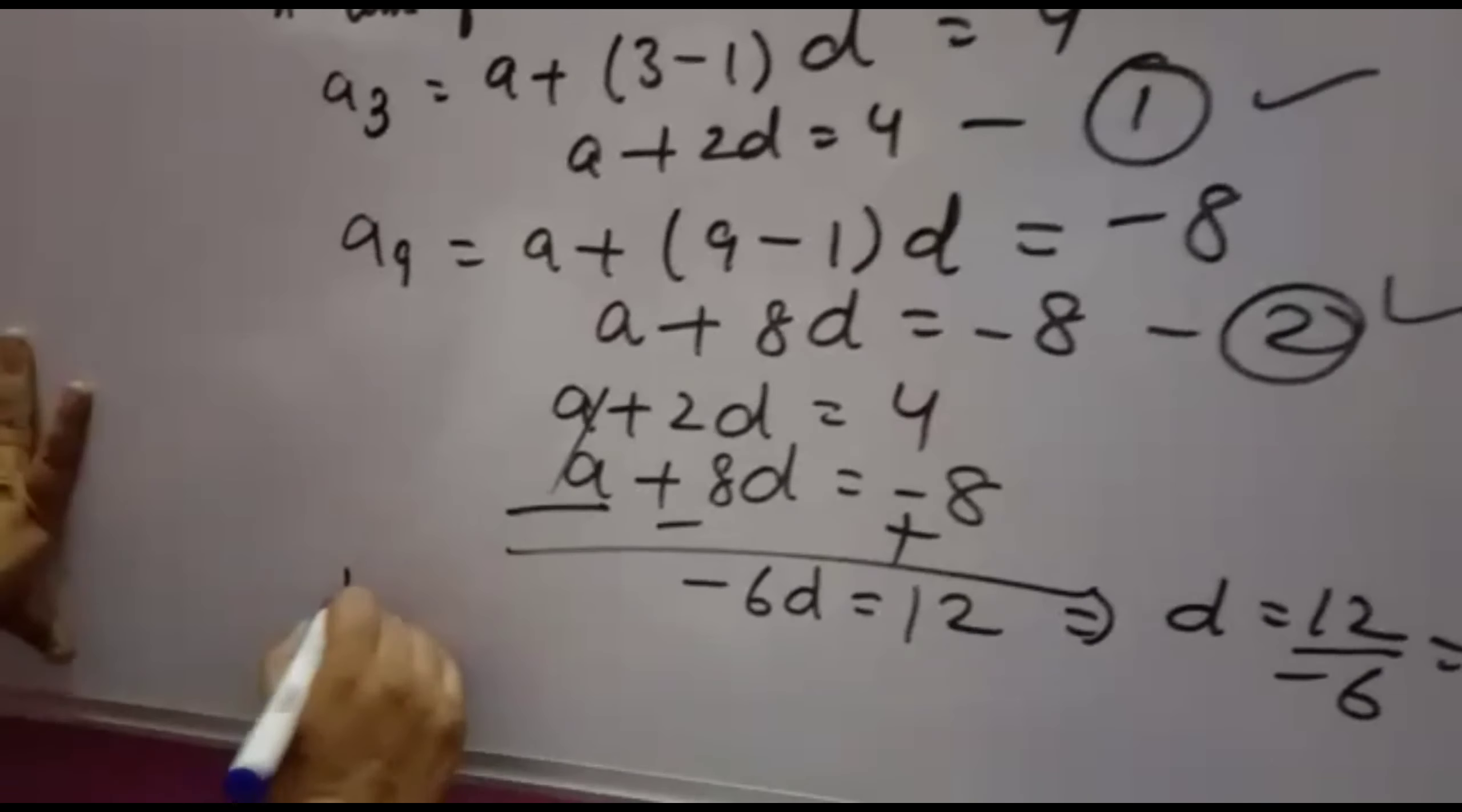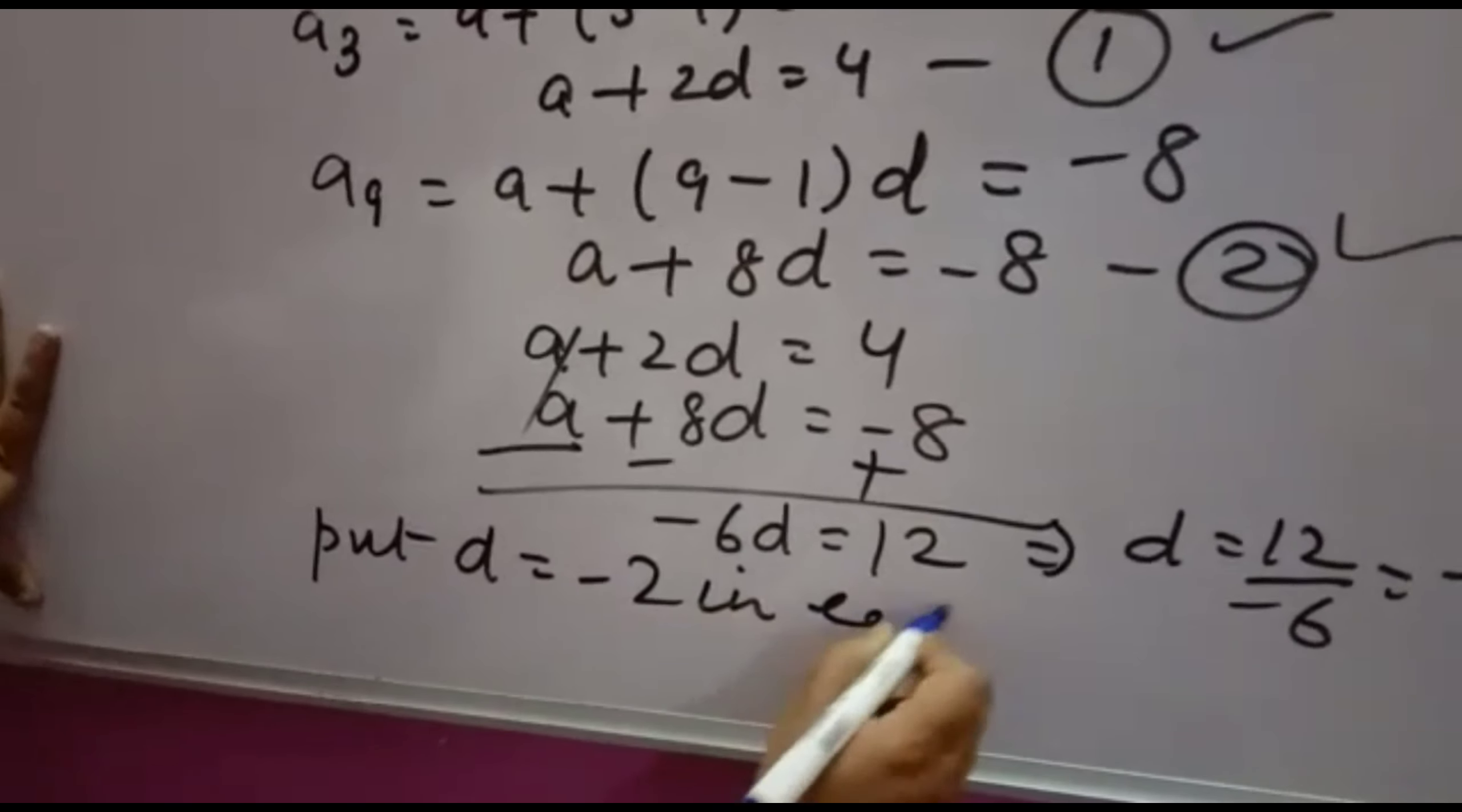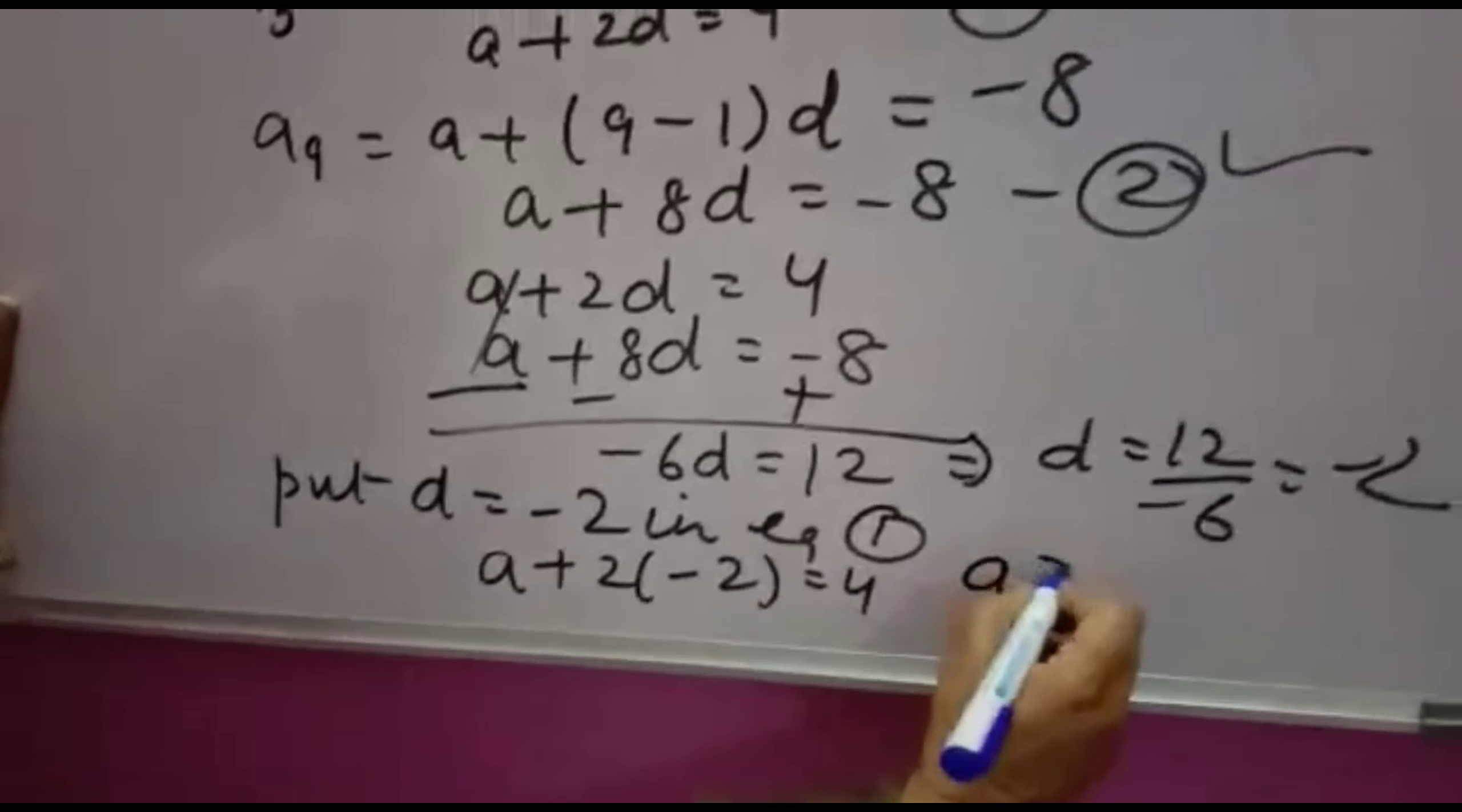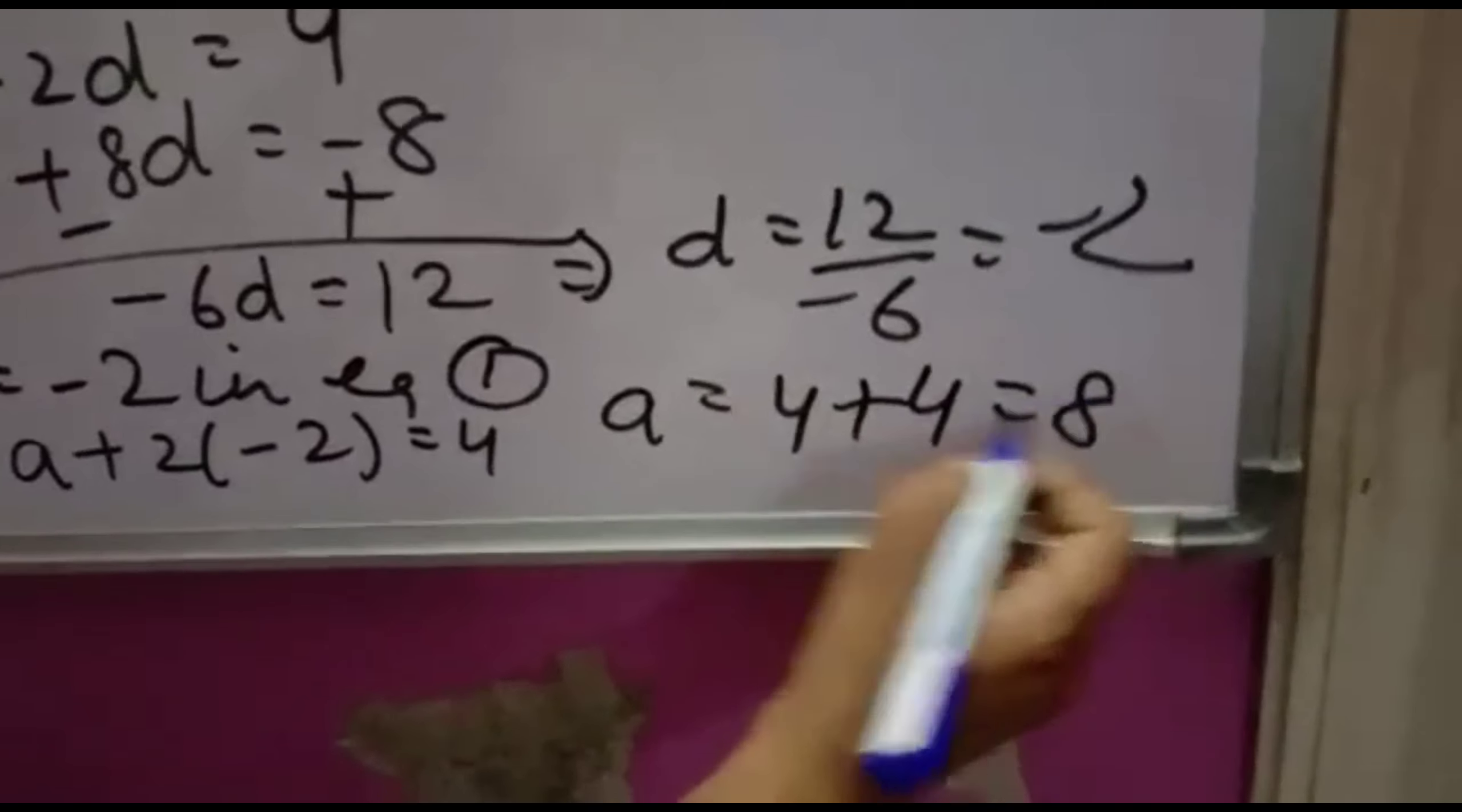Now we substitute D = -2 into equation 1. We get A + 2(-2) = 4, so A - 4 = 4. Moving -4 to the other side, A = 4 + 4 = 8.